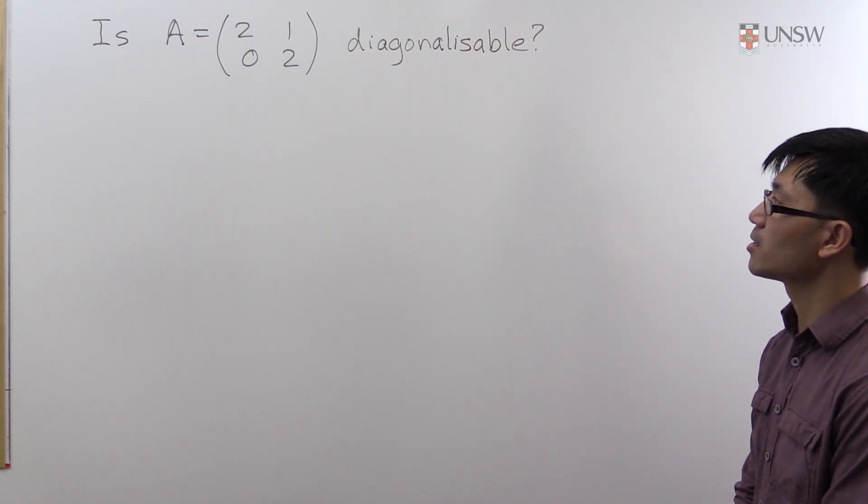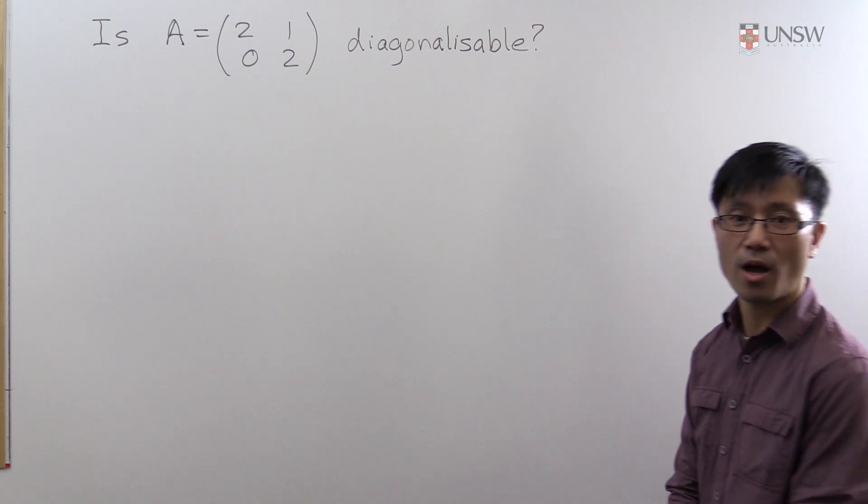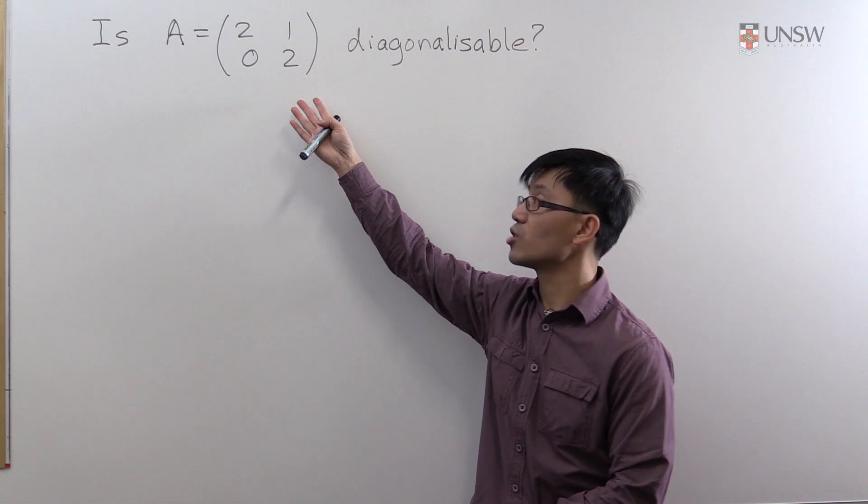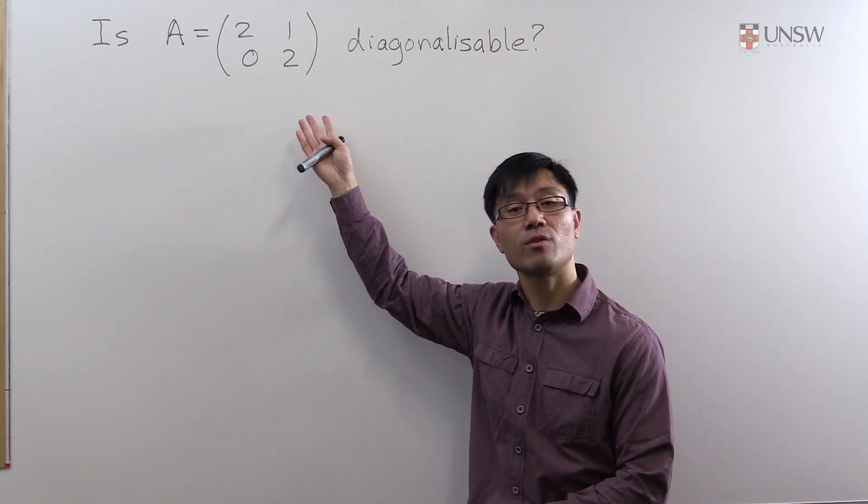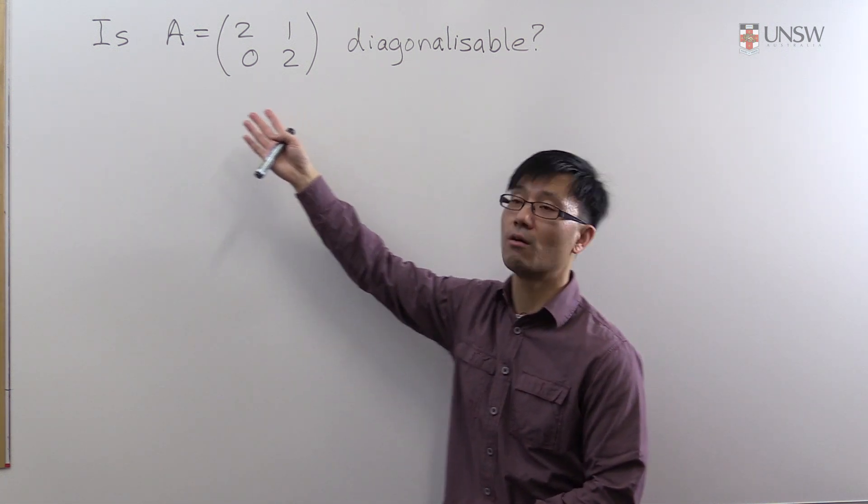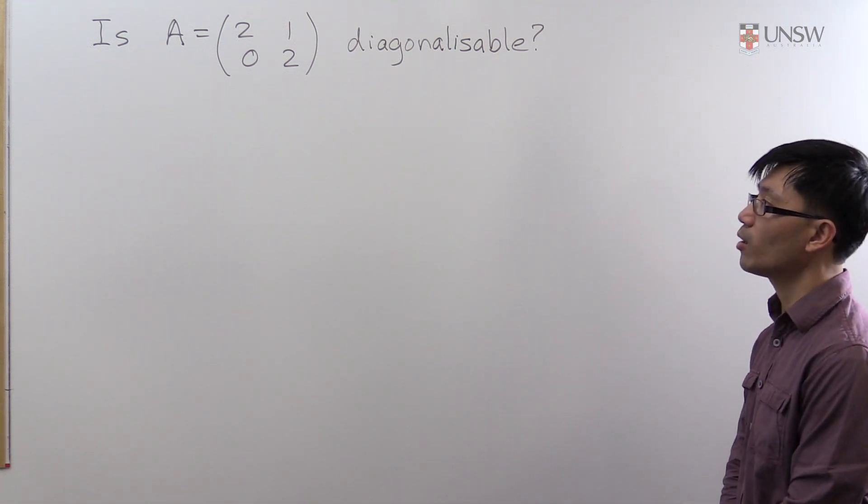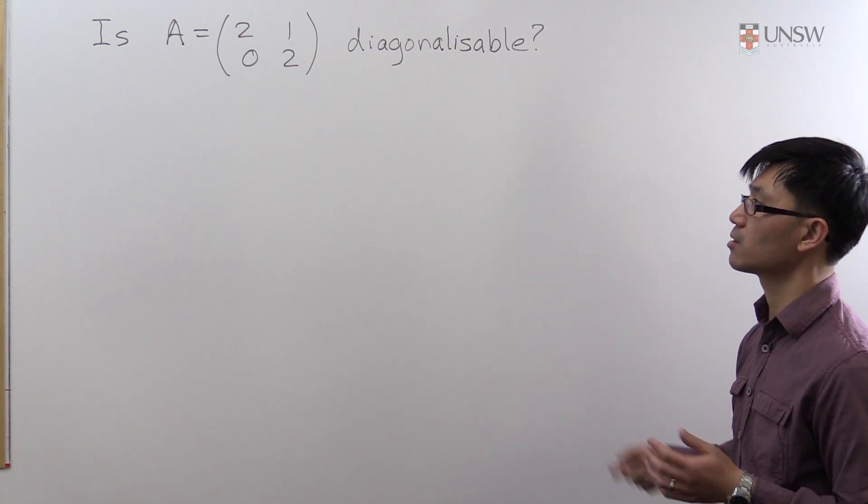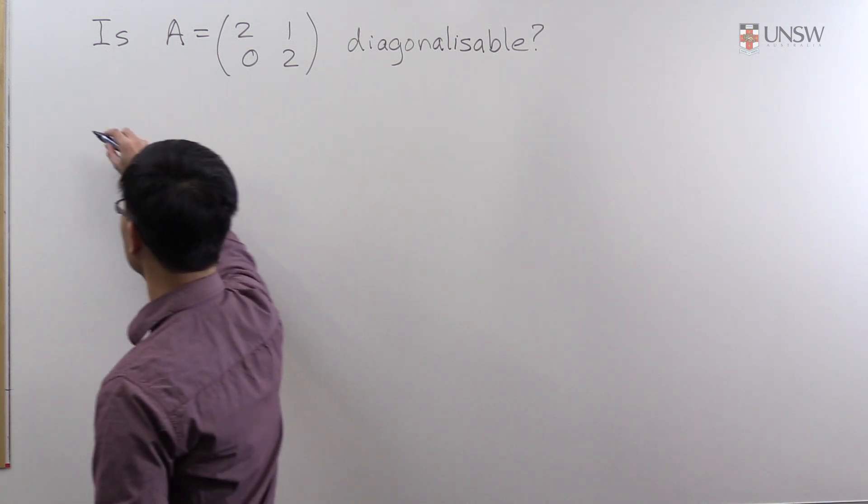So diagonalizability is a question that involves the theory of eigenvalues and eigenvectors, and the way we'll approach this question is to ask ourselves: can we find a basis of eigenvectors for A? So to do that we'll actually find the eigenvalues and find the eigenvectors. Let's look at the eigenvalues first.